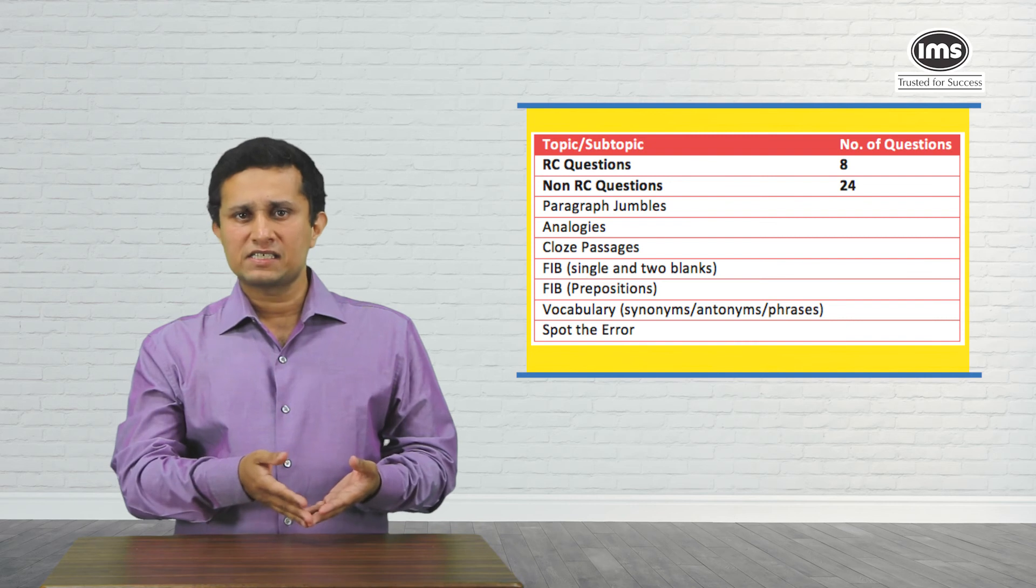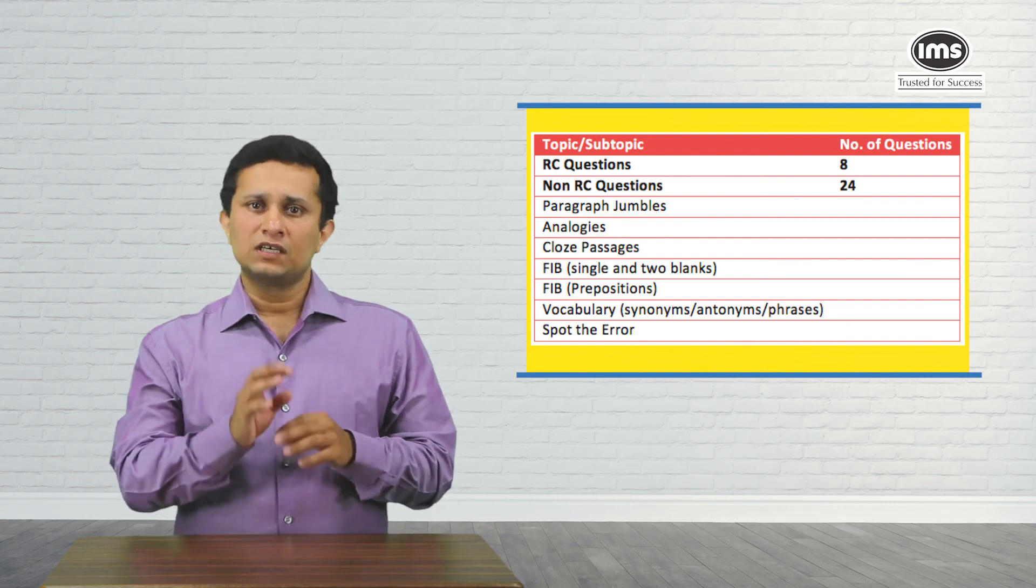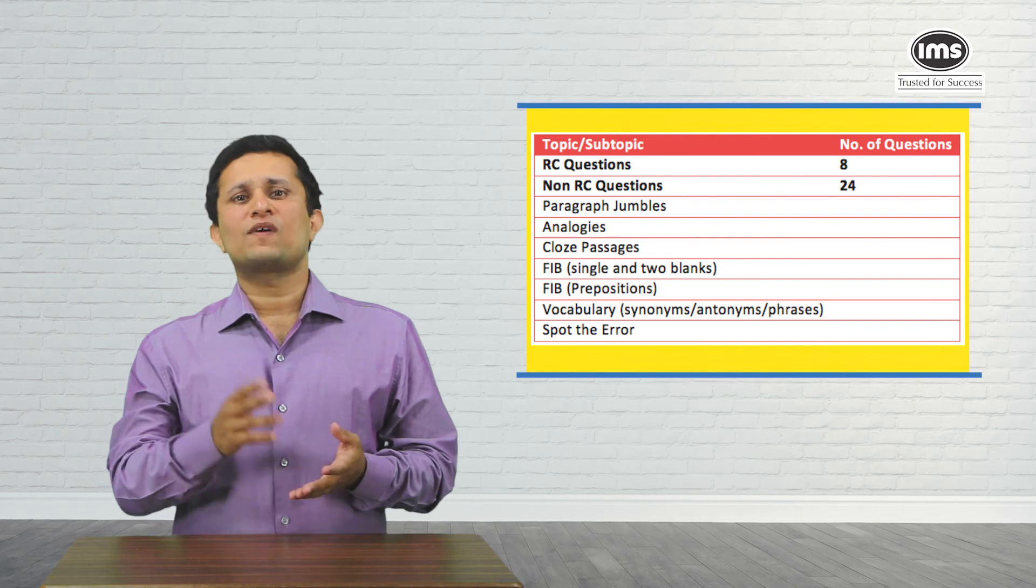Close passages and jumbled sentences but comprising either four or five statements. Again, on the whole, very standard section and anywhere close to 25 attempts with 85% accuracy would be a great performance.